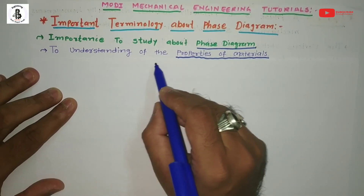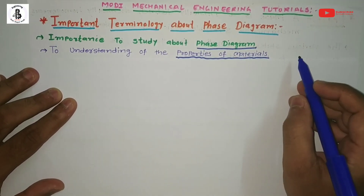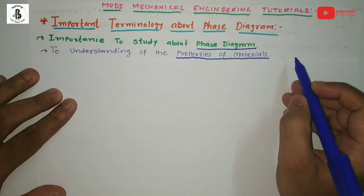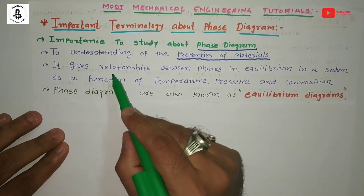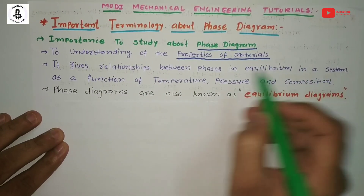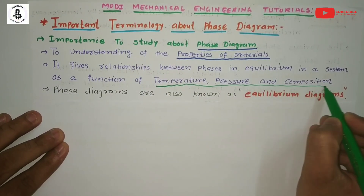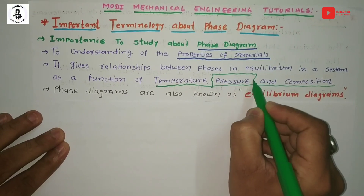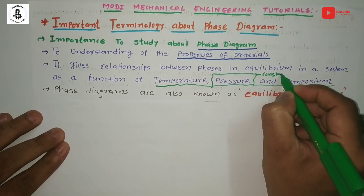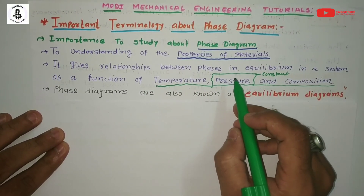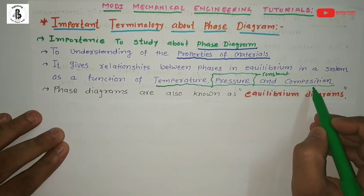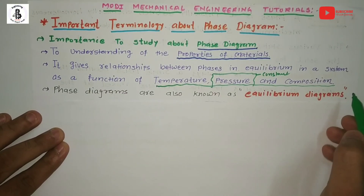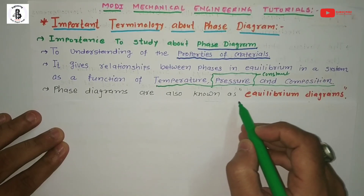For better understanding of the properties of materials at various set of conditions, we need to study them according to the loading of particular components used in engineering applications. Phase diagrams give the relationship between phases in equilibrium in a system as a function of temperature, pressure, and composition. Since most phase transformation processes occur at constant pressure, the relationship of different phases is represented with respect to temperature and composition — this is called an equilibrium diagram.